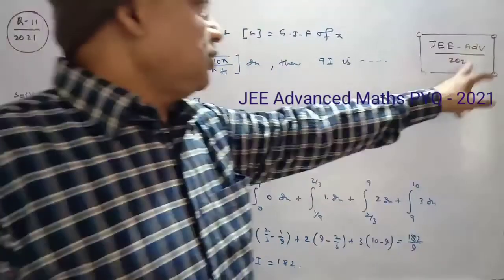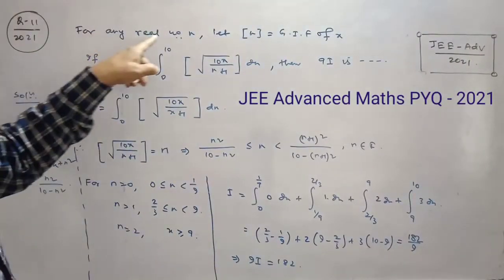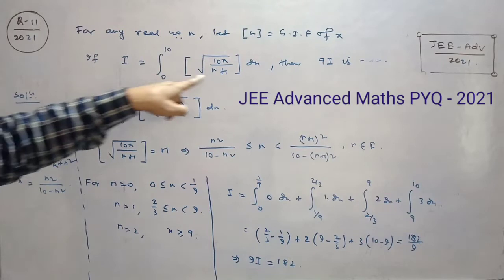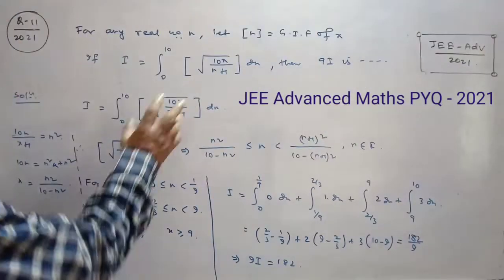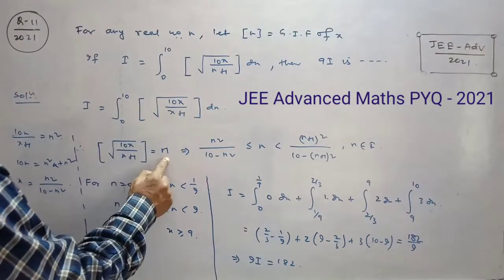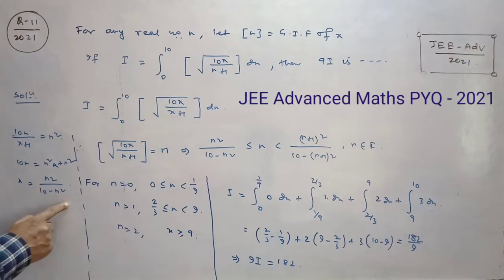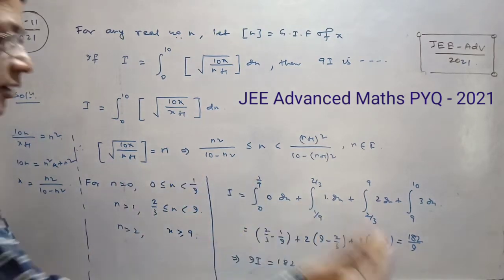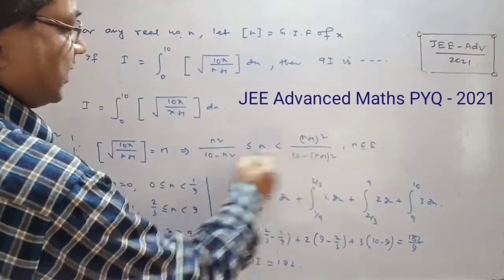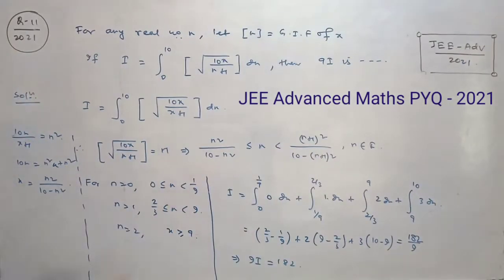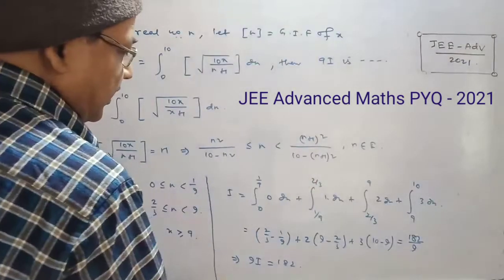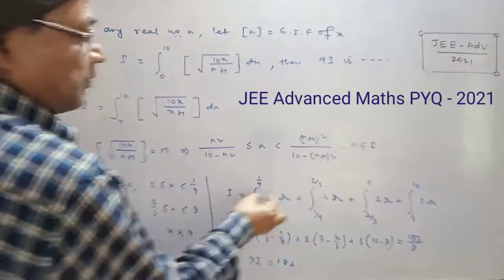Now, our question is 2021, and for any real numbers x, this is greatest integer function. I is equal to this, then 9i. This is n, x value. This is n, when x value n to n plus 1, this is n plus 1. Now n is equal to 0, 1, 2, these values are equal to 0, 1, 2. Now this is different sub-intervals divided.